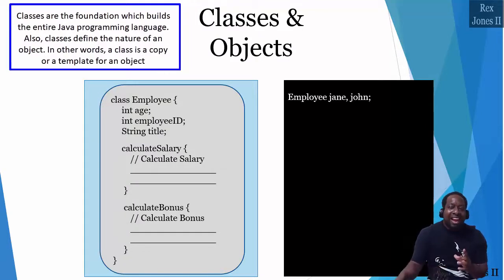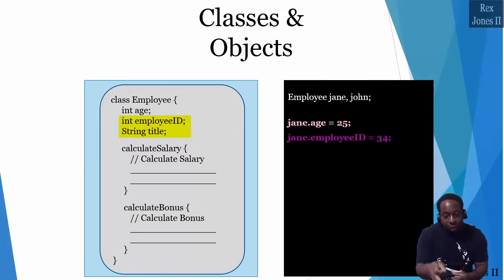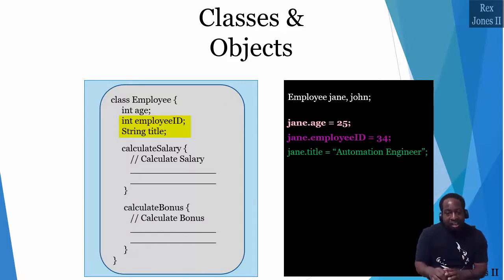Classes define the nature of an object. In other words, a class is a copy or template for an object. The same way class has age, our object Jane has age, and the value is 25. Just like the employee class has employee ID and title. Jane has employee ID with the value of 34 and Automation Engineering as the title.